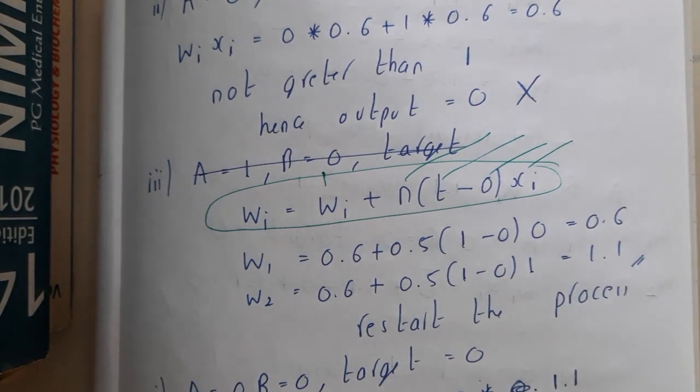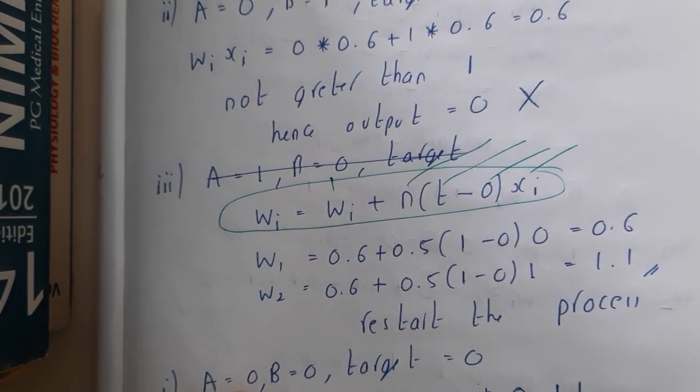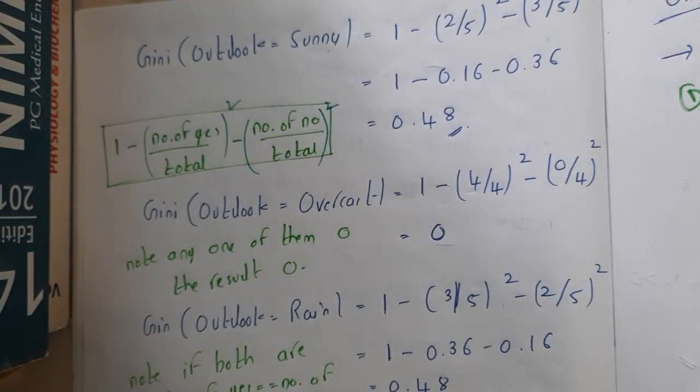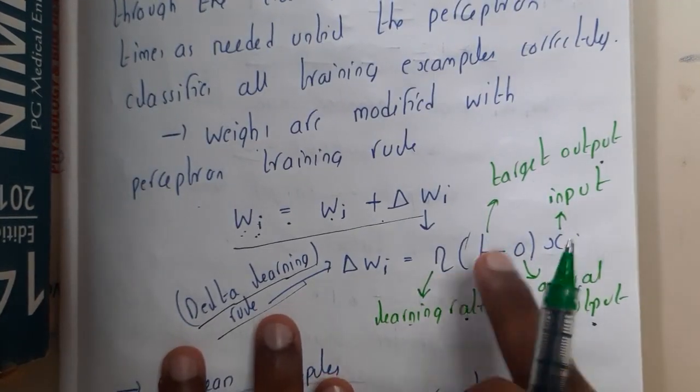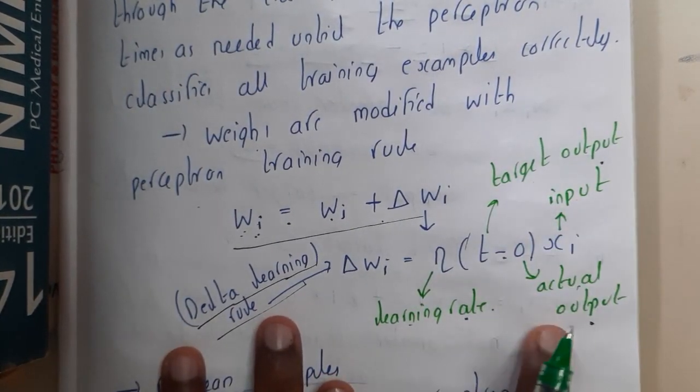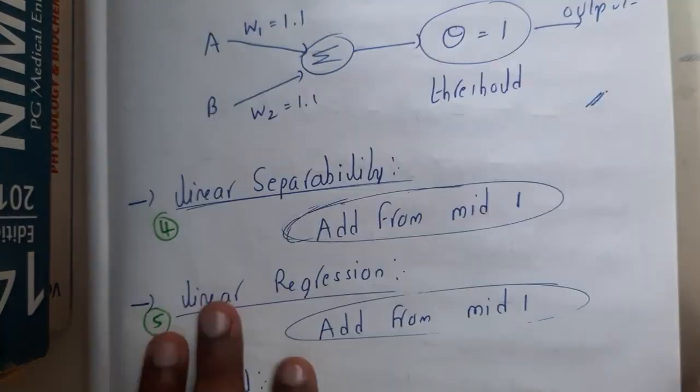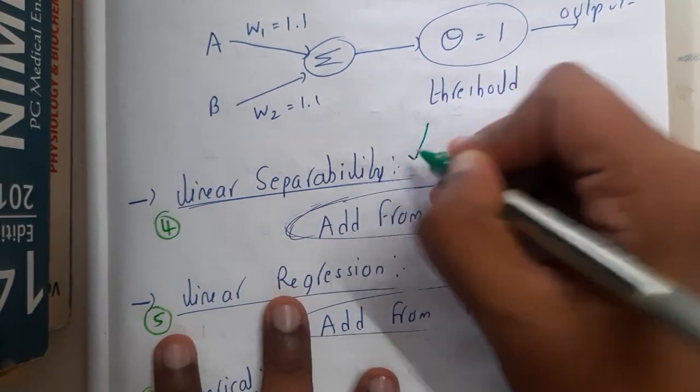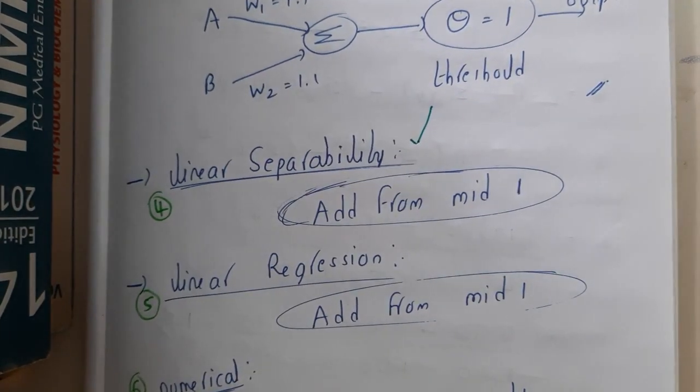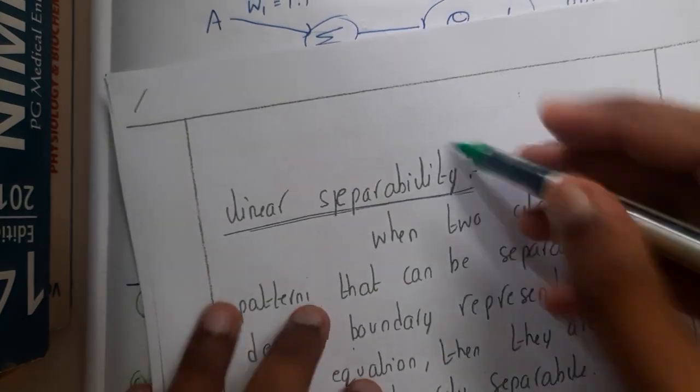Let me cross-check and revise again. This is learning rate, t is the target output, o is the output you are getting, and xi is the input. I hope everyone got a clear idea on this. In the next lecture, let us go through the concept of linear separability. Let us meet in the next lecture. Thank you, thanks for watching.